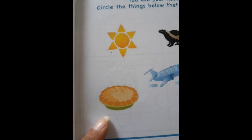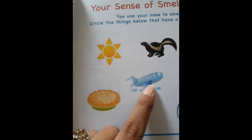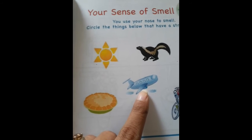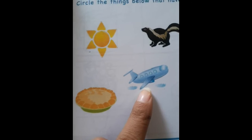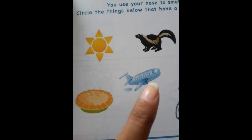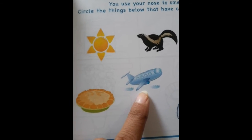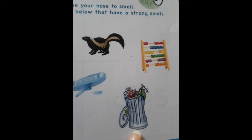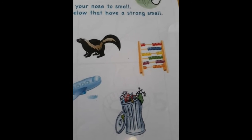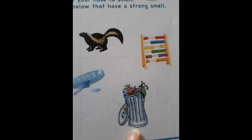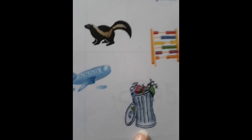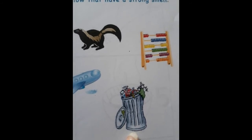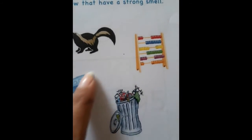Aap ko khushbu aatein na keek mein se? You smell kertein aap usse? And this is an aeroplane — hear the aeroplane. Aap aeroplane ko smell kertein ya hear kertein? Hear. So it means we don't circle the aeroplane. Now next one is the dustbin — oh, it's so dirty. Aap dustbin ke paas jaatein, dustbin pe se smell aati hai na. So you have to circle the dustbin.